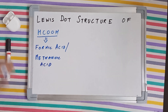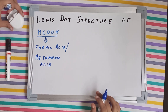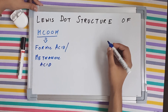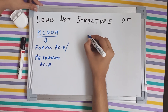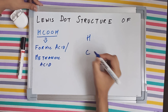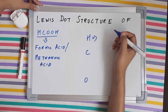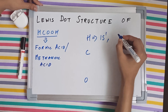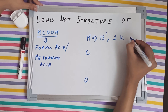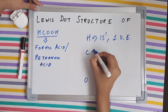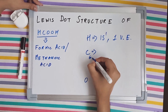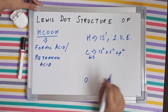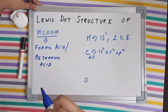Now let's talk about the structure, but before diving into the structural part we are going to talk about the electronic configurations of the different elements present in this molecule: hydrogen, carbon, and oxygen. The electronic configuration of hydrogen is 1s1 and it has just a single valence electron.